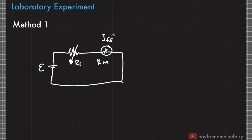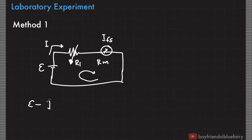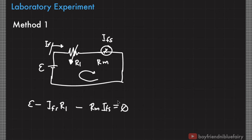Once you achieve full scale deflection, apply Kirchhoff's loop rule. Assuming current flows in the defined direction: E minus I_fsd times R_1 minus I_fsd times R_m equals zero. This is the equation for the first case.